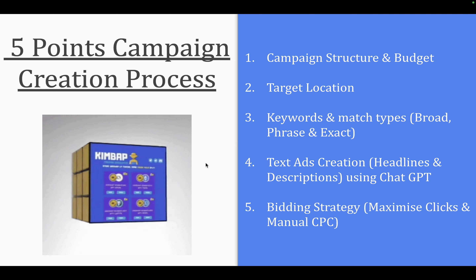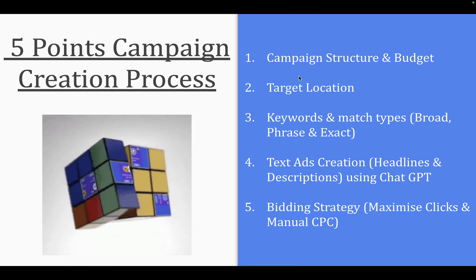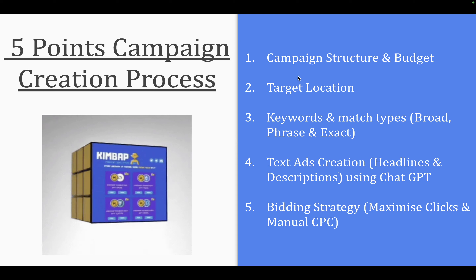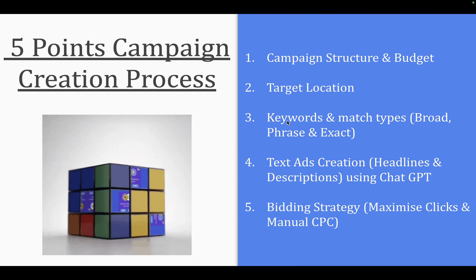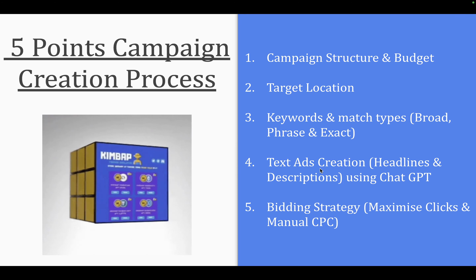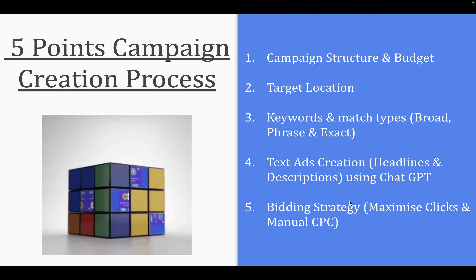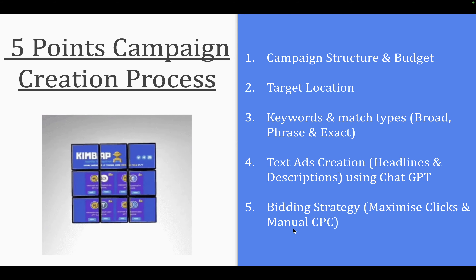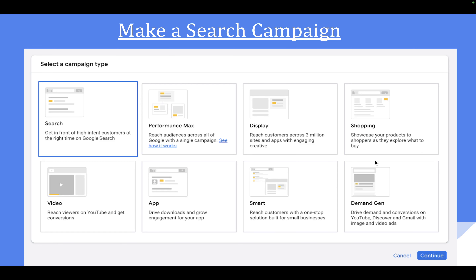All you have to do is start with learning the campaign structure and campaign budget — point number one. Then learning the target location — point number two. Knowing how to launch your keywords in different match types. How to create a text ad for headlines and descriptions using ChatGPT. And finally, how to provide the bidding strategy for a search campaign. Having an understanding of all five points means we can simply make a search campaign.